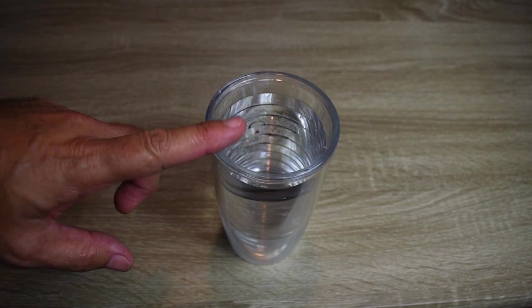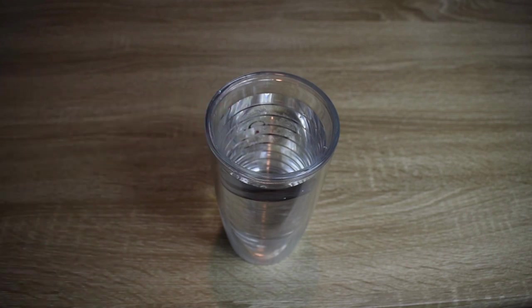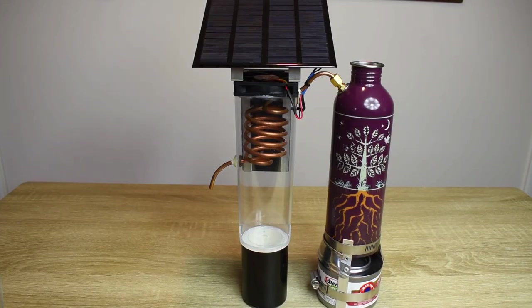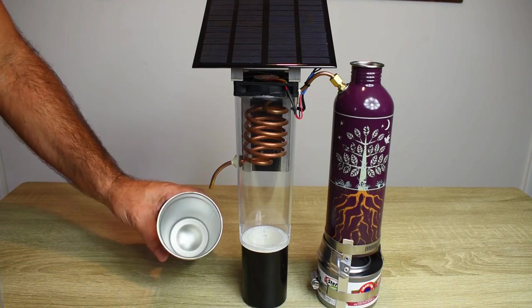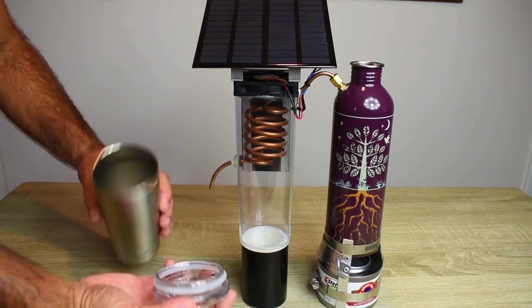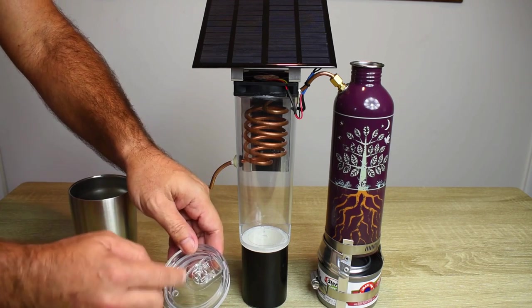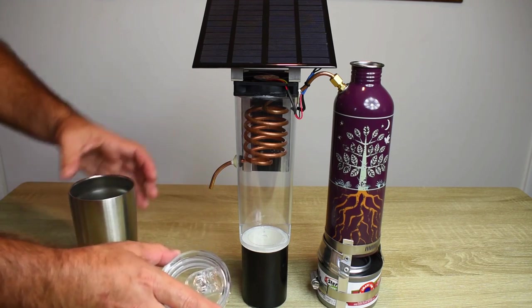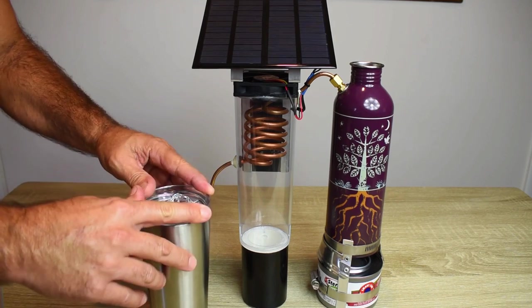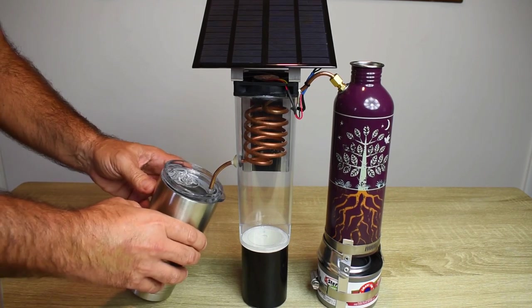Now we're going to take the water, pour it inside the bottle, and get the fire going. All right, you can see the inside of this is empty. I'm going to leave this open just a hair so when the condensation builds, some of the steam can escape if it has to.